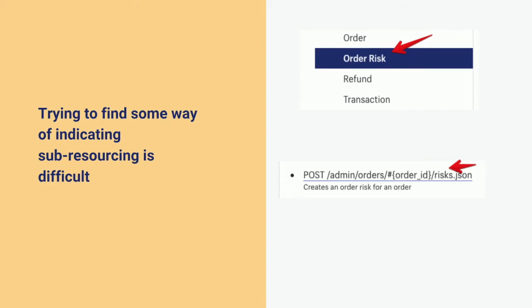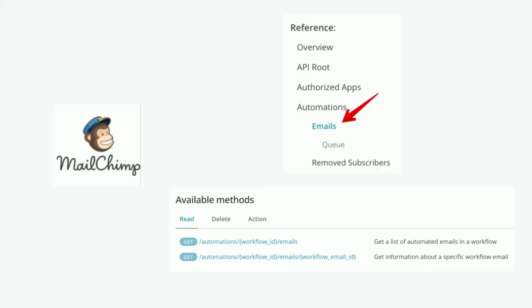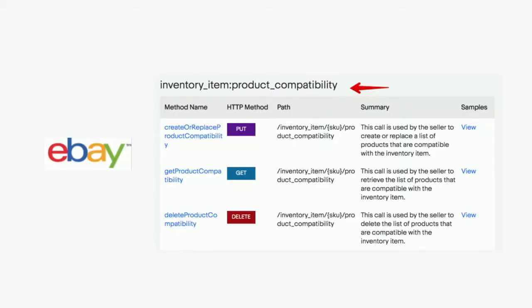If we were to put them together, you'd think: there is a resource called 'order risk' and I'm going to access this thing called order risk. This is something fairly widely adopted across some APIs. For example, MailChimp — if you want to access the email resource, you do so at the automations resource, and they've baked that right into their navigation where you can drill down under automations to the endpoint calls specific to emails. Similarly with eBay, the whole way they've structured their navigation is around surfacing the concept of resources and sub-resources.